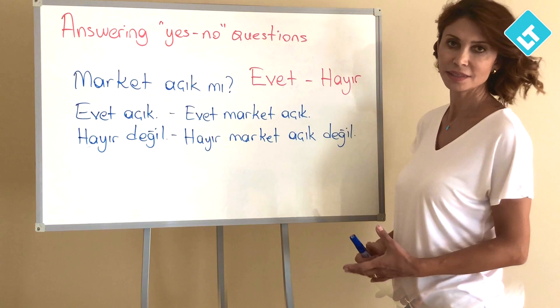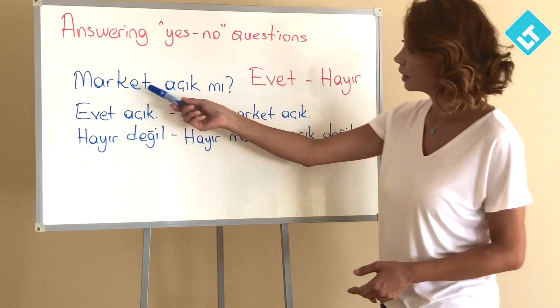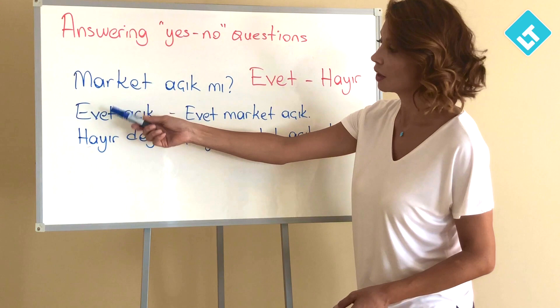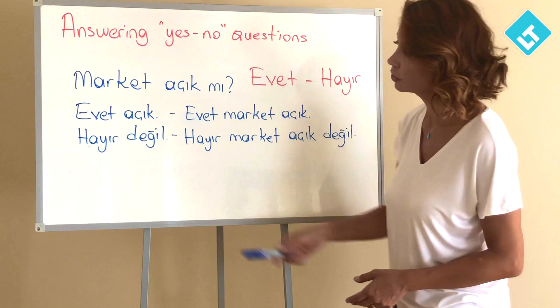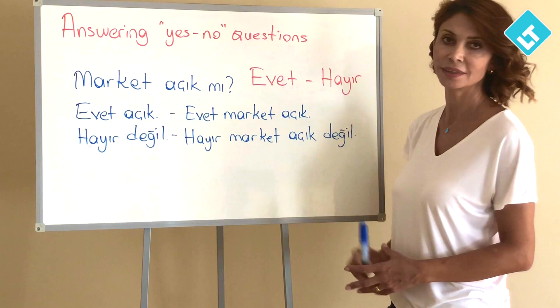We use Evet and Hayır to answer yes-no questions. Evet means yes, hayır means no. Market açık mı? — Is the market open? If yes, you can say Evet açık or Evet market açık. If not, you can say Hayır değil — No, it's not. Değil means 'not.' You can also say Hayır market açık değil.